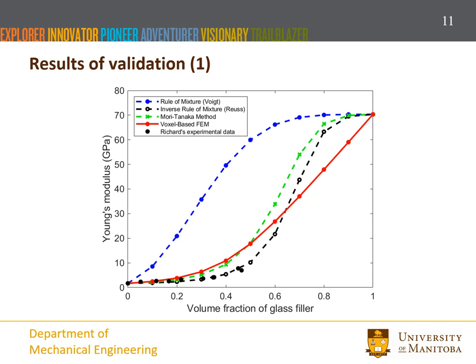Some of the validation results are shown here. This figure shows results related to Young's modulus. The solid black circles represent experiment data. The red line is the result of voxel-based finite element modeling. The blue dashed line is the rule of mixture, the green line corresponds to the Mori-Tanaka method, and the black dashed line is the inverse rule of mixture. It can be seen that the inverse rule of mixture has the best agreement with the experiment data.